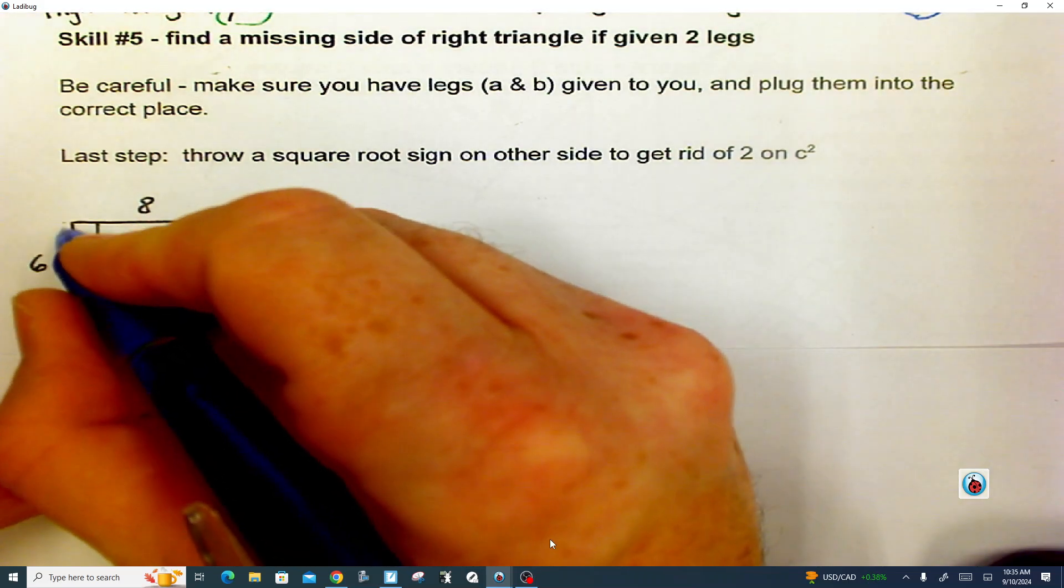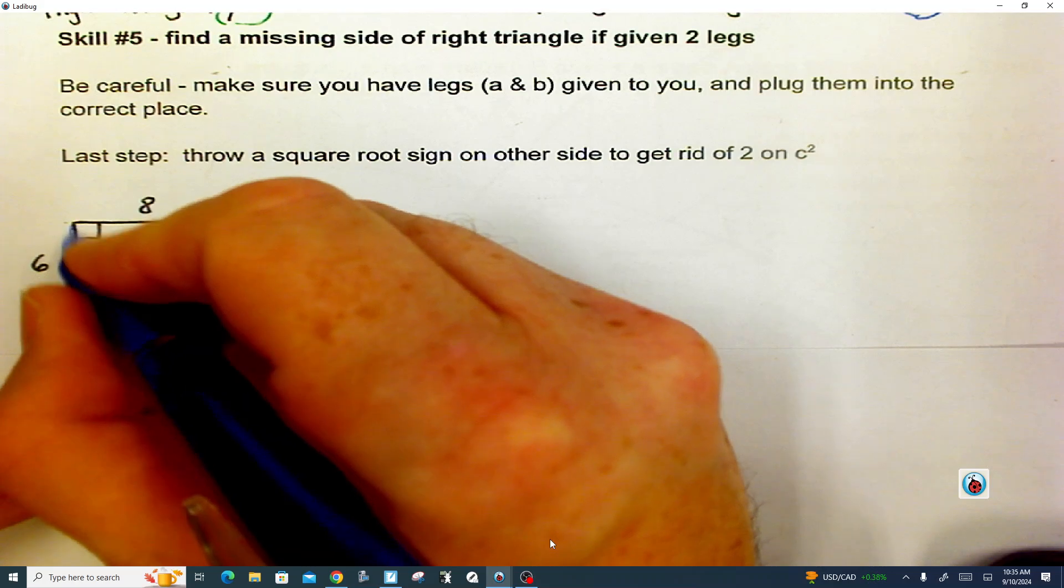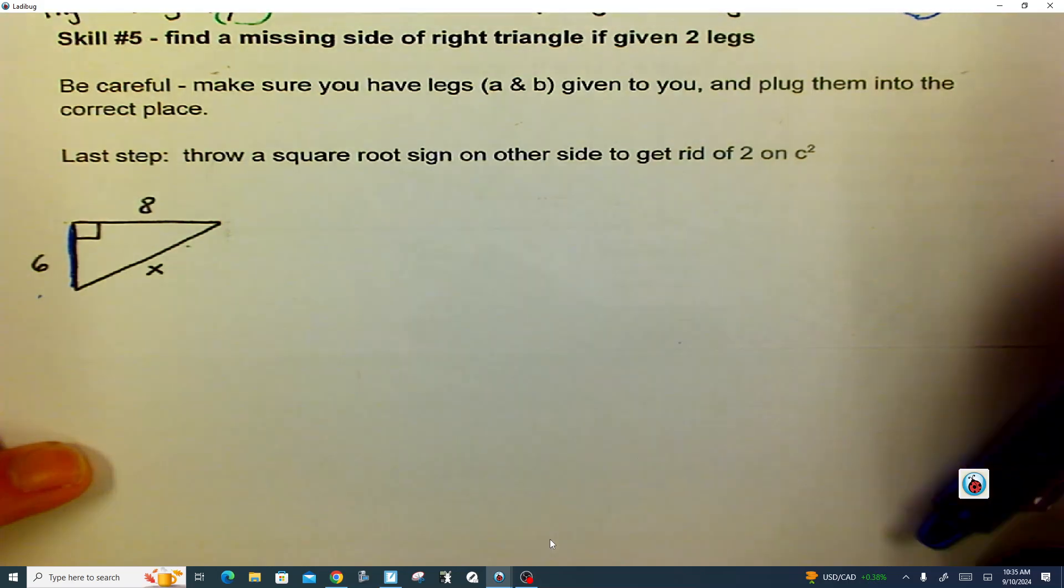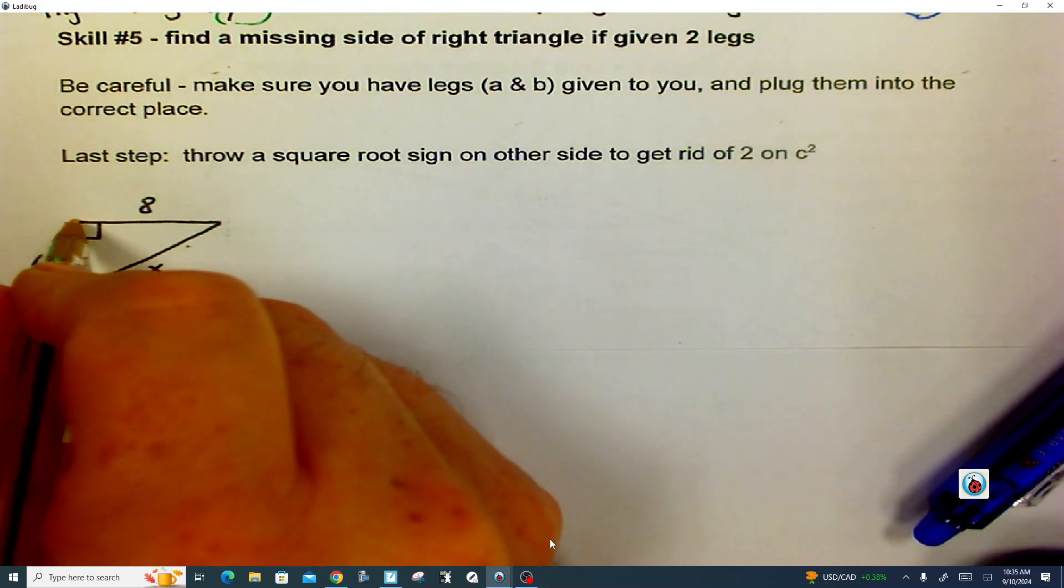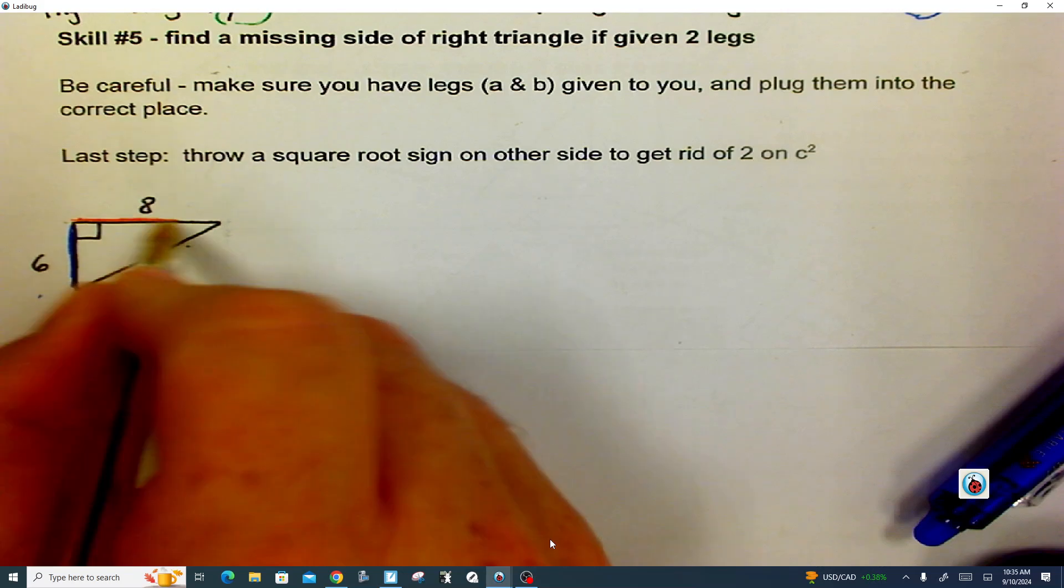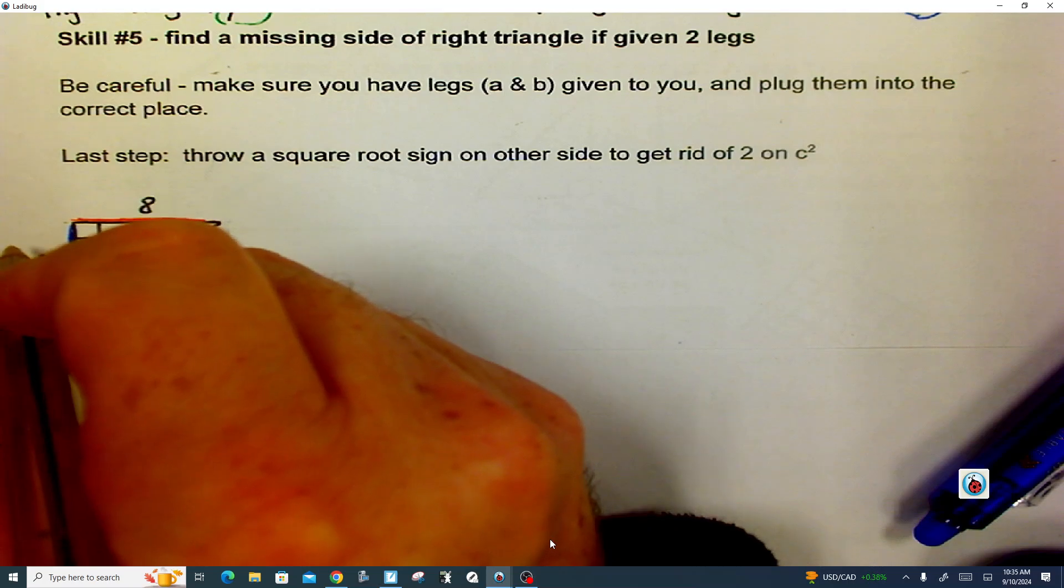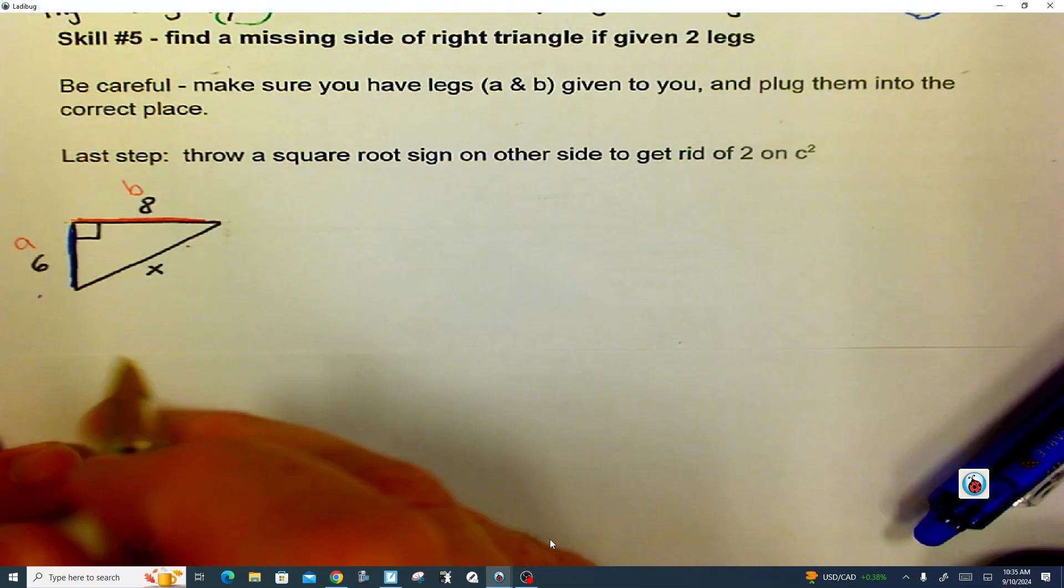But we know that if this is a right angle and this is a right triangle, then this side is six, and this other side, let's just put it in red here this time, the red and blue sides would be touching the right angle. So those are my legs, those are my A and B.